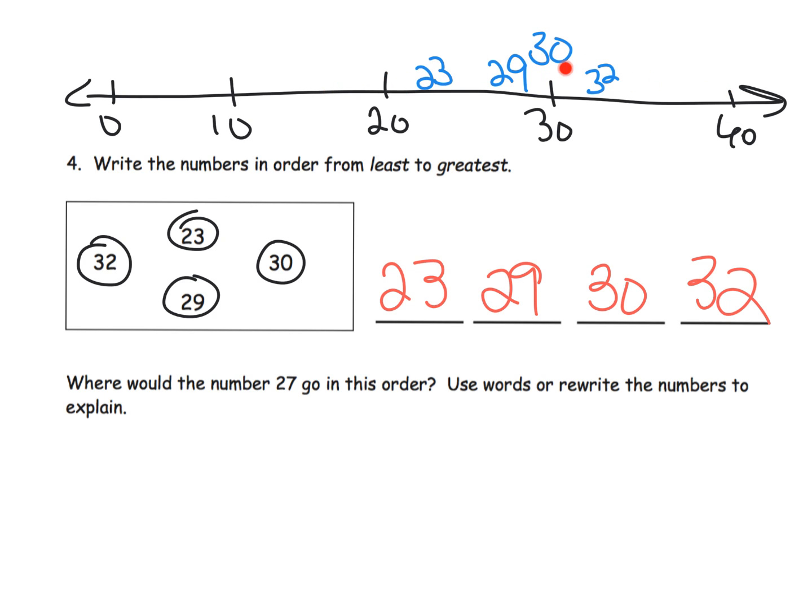No no no no, have our students place these numbers on a number line or some similar thing, and then that number line is going to immediately tell us the order from least to greatest. This way students are placing the numbers from least to greatest but they're doing it by developing number sense rather than just blindly following a rule.